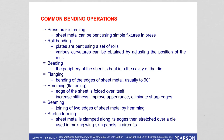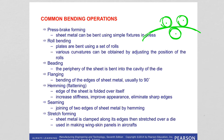Roll bending uses a set of rolls separated in a certain configuration whose positions can be adjusted to give the desired bend. Beading involves bending the periphery of the sheet into the cavity of the die.